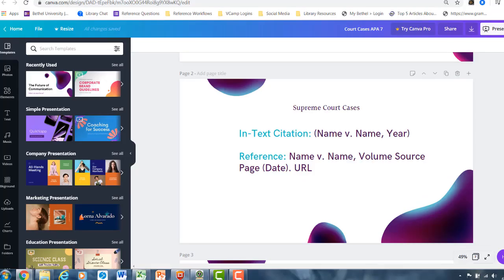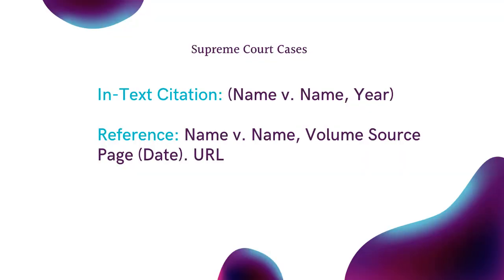Here is the general layout used for Supreme Court cases. An in-text citation will feature the name versus the name and the year. The reference of a Supreme Court case will include the name versus the name, the volume, source, page, the date, and the URL where you retrieved the court case.